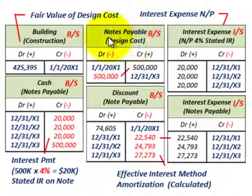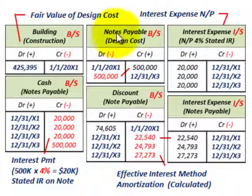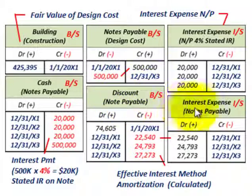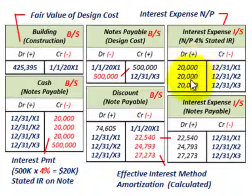That takes care of this note that was exchanged where we didn't have any market value on it — it wasn't readily marketable, and the stated rate of interest varied from the effective or imputed rate. We had to recognize the imputed or actual total interest on this note through the discount account, amortize it using the effective interest method to recognize interest expense, and also recognize the actual interest expense on those cash payments. That takes care of the imputed or estimated interest rate for a note.